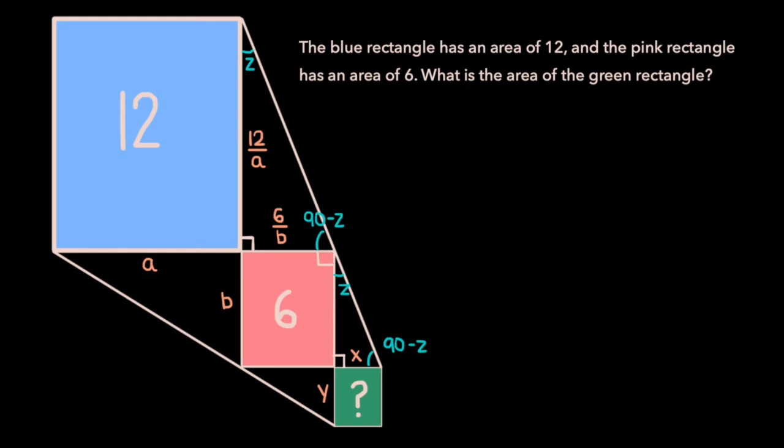Now before we move on, just for clarification, let's label the other two sides of the pink rectangle. We know the longer side is of length b, and that the shorter side is of length 6 over b.